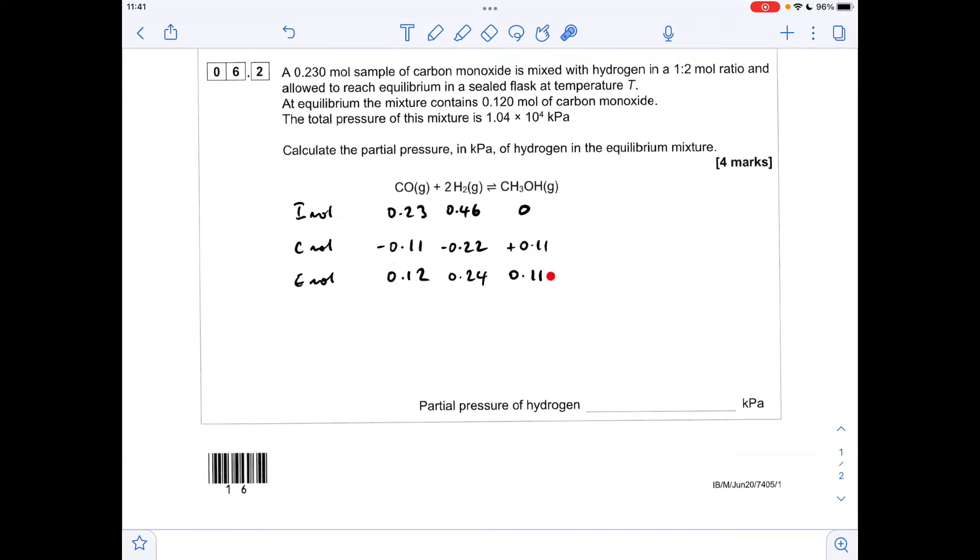The reason we need to know all of these is because we need to work out the total moles and then find the mole fraction for the hydrogen. The mole fraction for hydrogen is 0.5106 dot dot dot - just means I'm keeping the full number in the calculator. We just need to multiply this by that total pressure to get the partial pressure, which gives a partial pressure for hydrogen of 5.31 times 10^3 kilopascals.